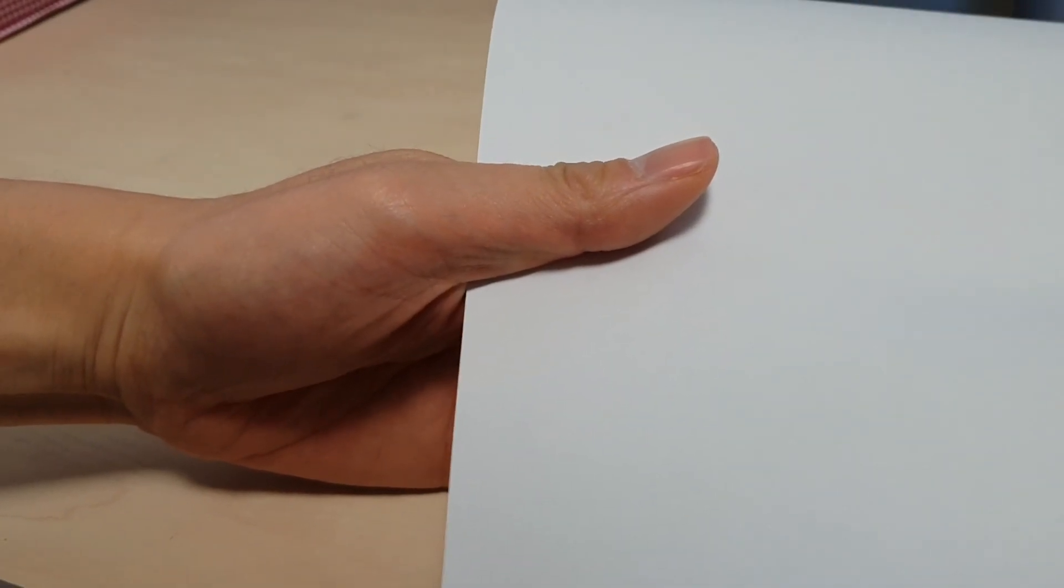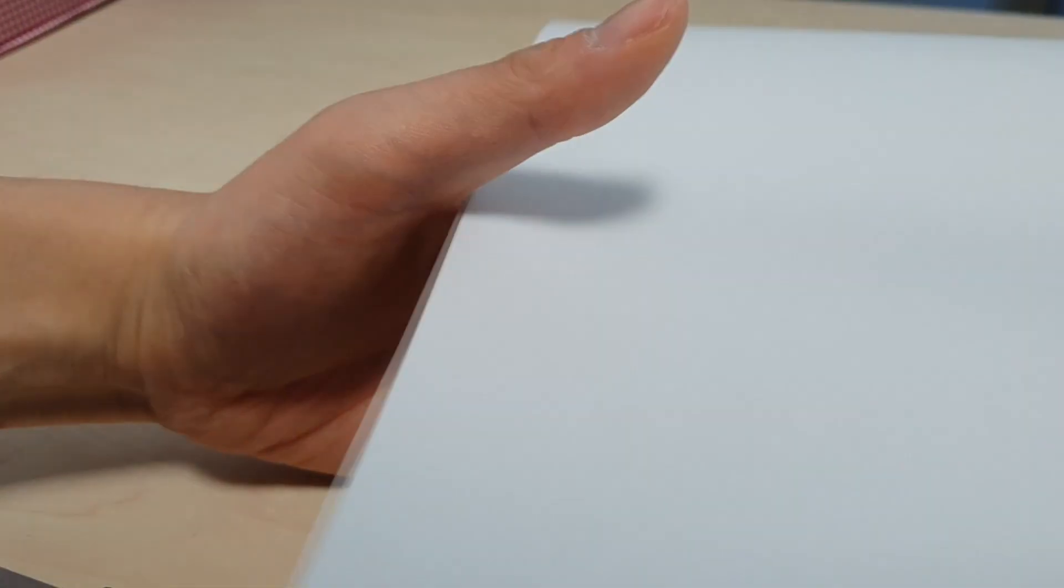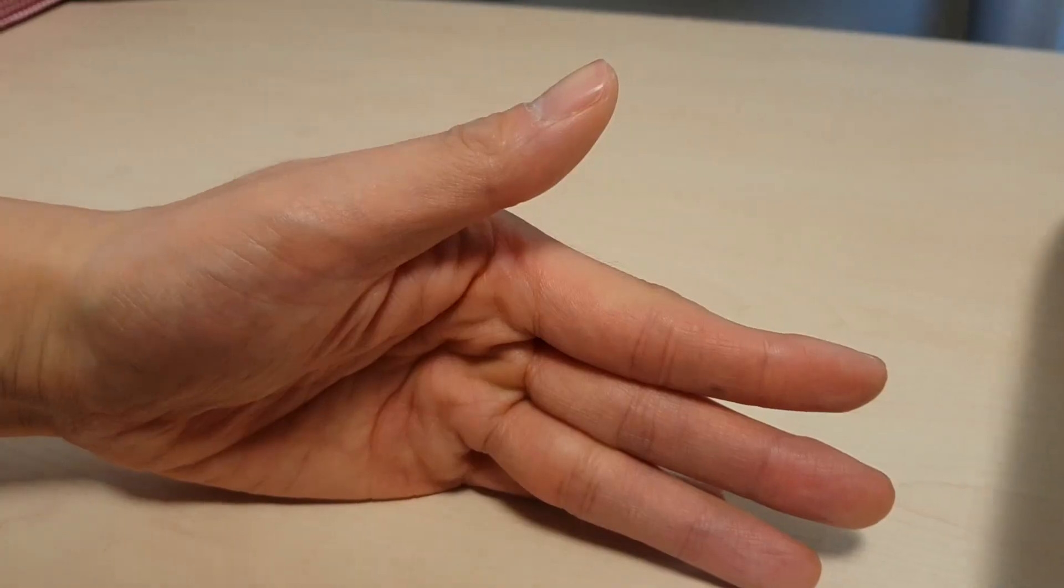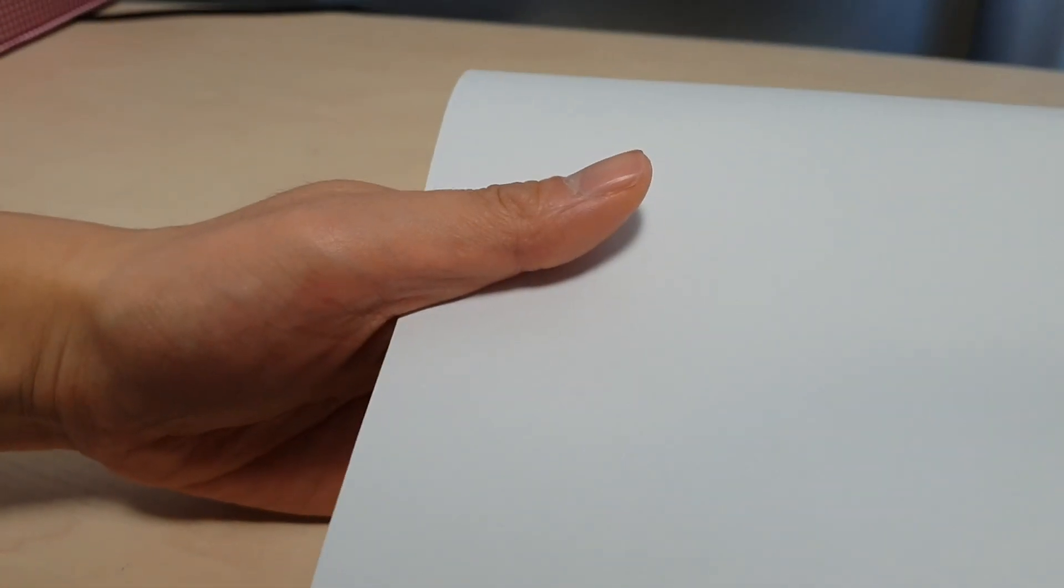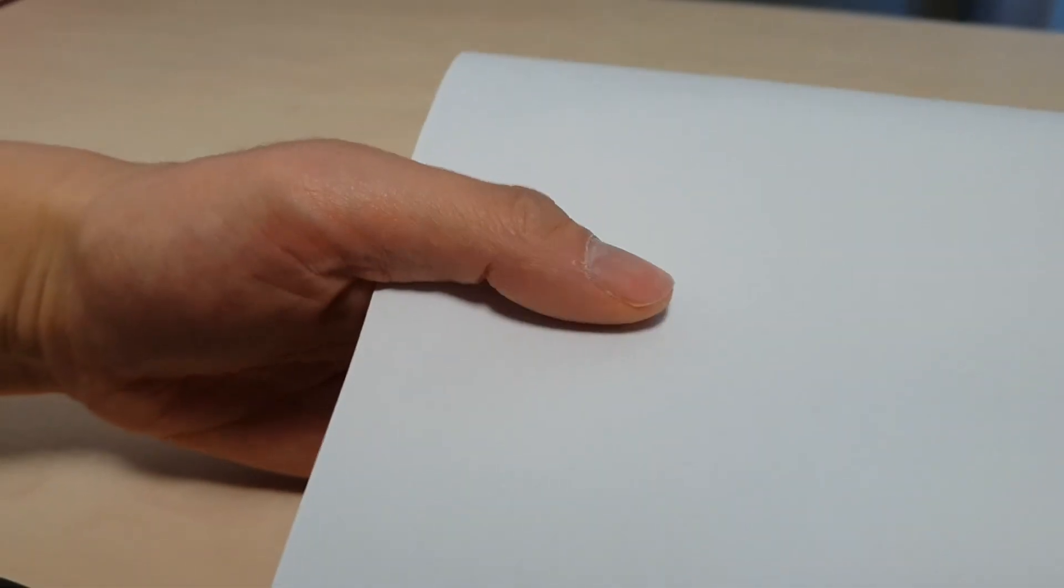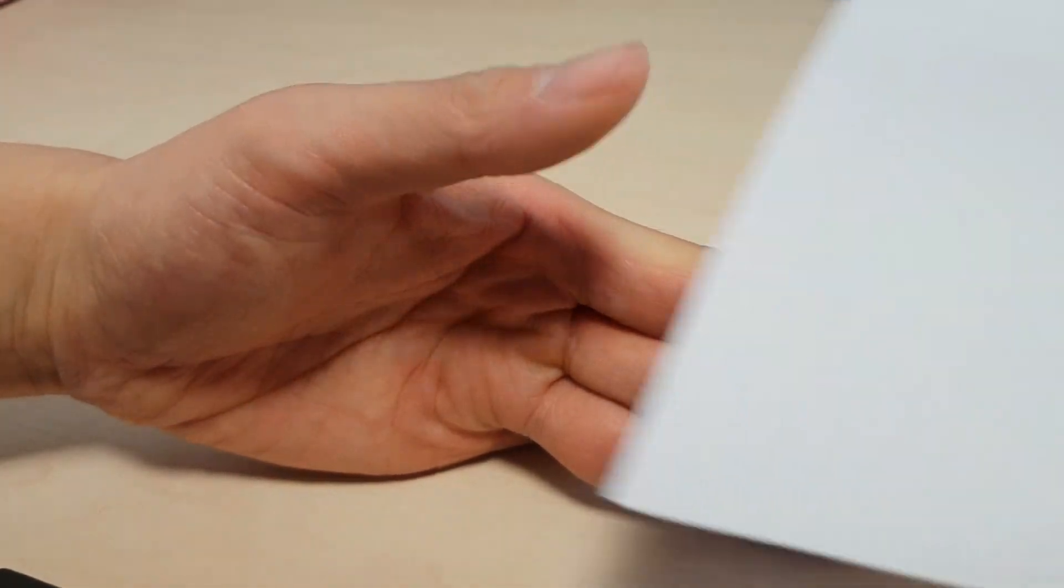Froment sign is an examination method for palsy of ulnar nerve. We ask patients to grasp a paper between thumb and index finger. Patients cannot hold paper or flex thumb to grip paper. This means palsy of ulnar nerve.